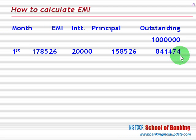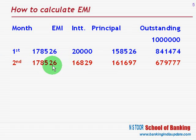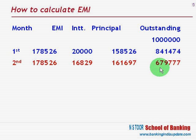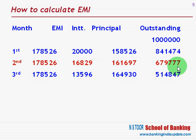At the end of the second month, this is the amount of equated installment. On the amount of Rs 8,41,474 at 2%, interest comes to this value. Amount of installment minus interest gives the amount of principal that would be paid. Hence, the remaining balance is Rs 6,79,777 at the end of the third month.